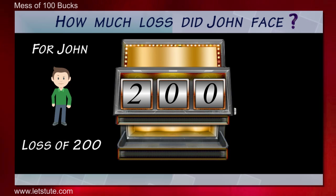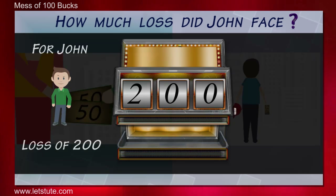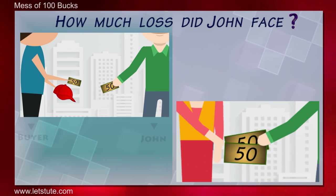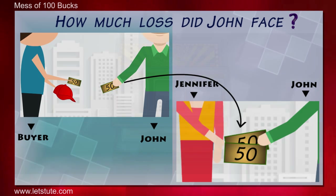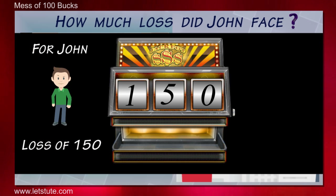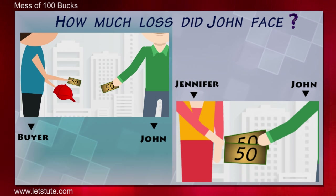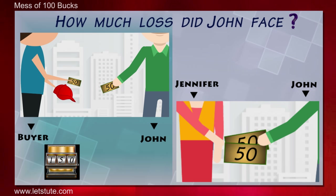No, there is some mistake. After selling the cap, John was left with 50 bucks and he had to arrange only 50 more to give it to Jennifer. So in total, it's a loss of 150 only, right? Or are we still going wrong somewhere? Are you all puzzled? Some might be thinking it's a loss of 150 and some would say it's 200.